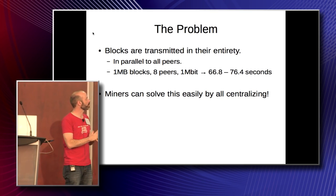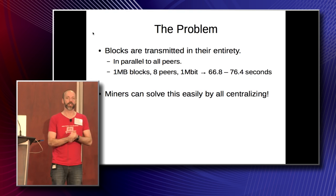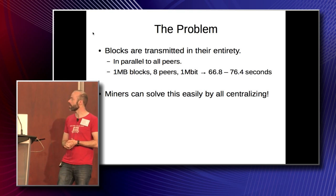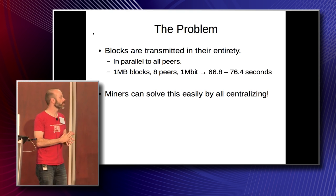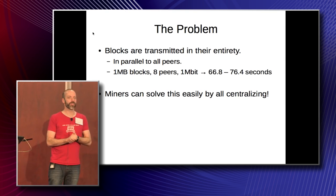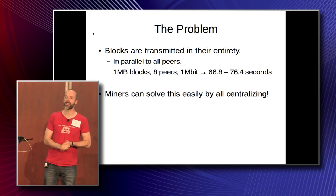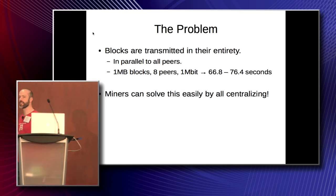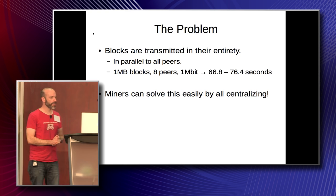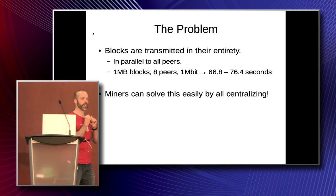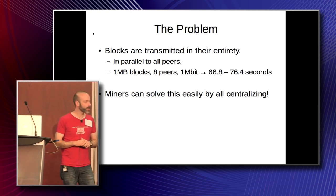The problem is currently blocks are transmitted in their entirety. If you're like me and you have a one megabit uplink and you're connecting your node to eight peers, your first peer will see a one meg block in about 66.8 seconds. That's significantly slower than you'd expect. The last one is about 76.4 seconds because we basically blast out blocks in parallel to all our peers.